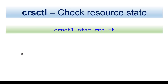If you want to look at the status of your cluster, you can use CRSCTL STAT RES T. T stands for table — if you omit T, it will give you the output without tabular format. STAT stands for status, RES stands for resource. So CRSCTL gives you the status of your resources in a tabular format.